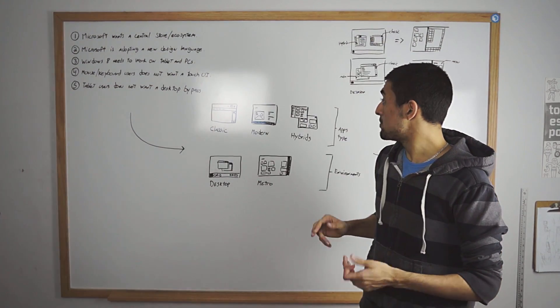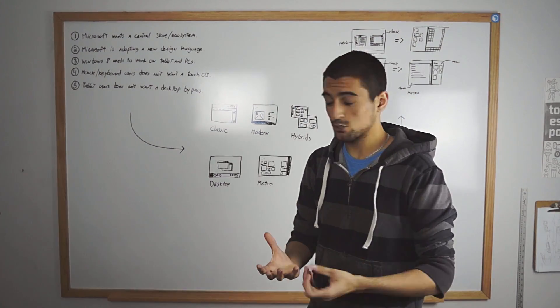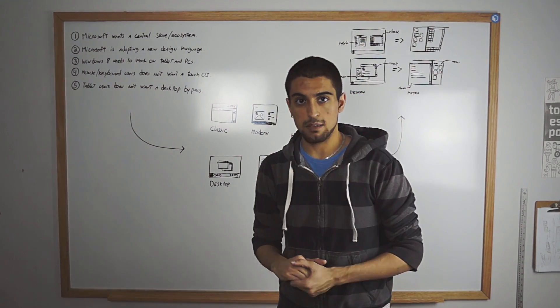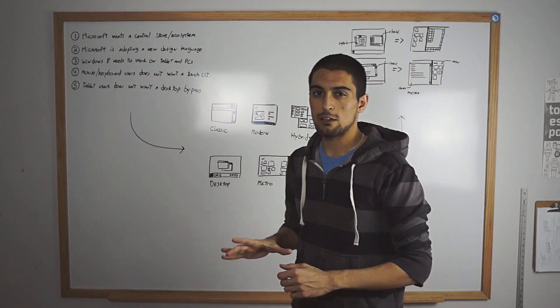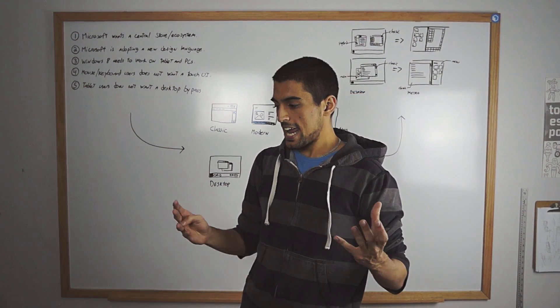Second type of app is the modern apps. So this is the Metro apps as we know them and we can download from the store. We're gonna call them modern apps for now. So modern apps is very simple, you download them from the Microsoft store and you know they're great.